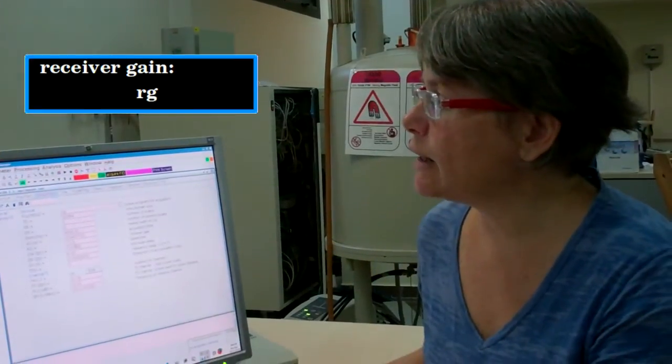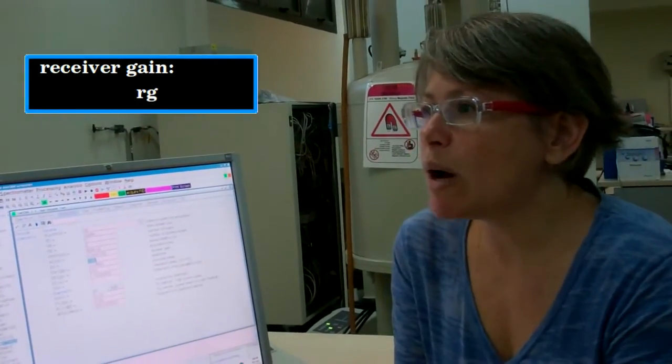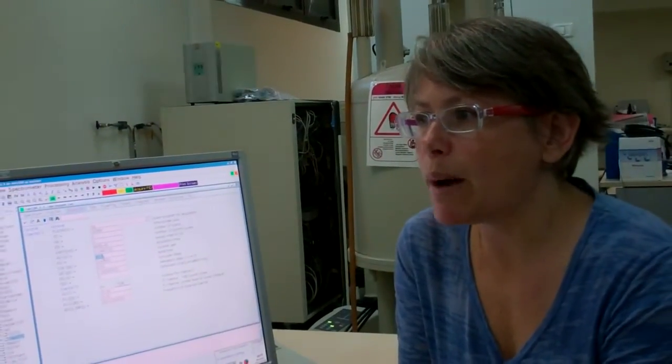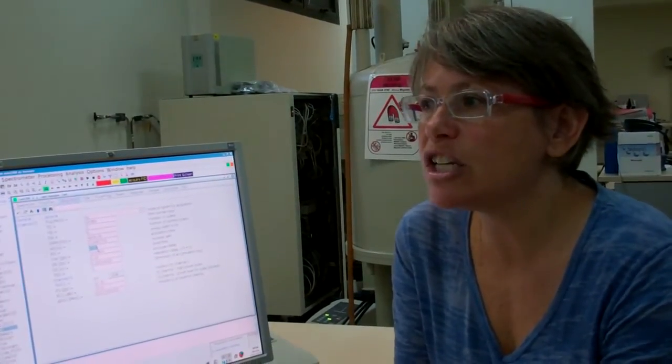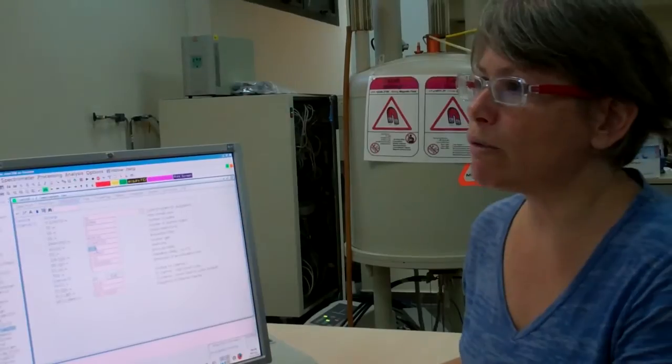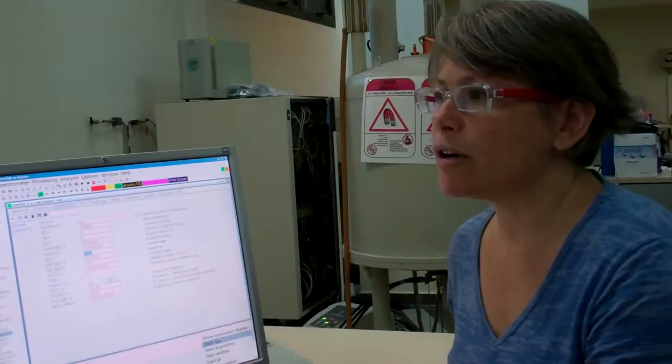The receiver gain is how much to amplify the signal before digitizing it. The spectrometer will automatically determine the optimal receiver gain experimentally with the command RGA. We'll right-click on the Acquisition Information window and choose Start RGA.